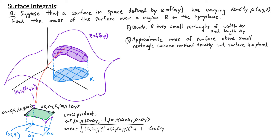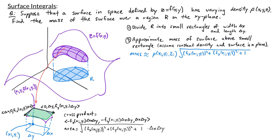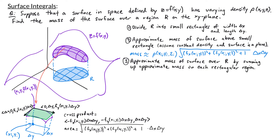Now we can approximate the mass of the surface above this small rectangular region. The mass is approximately the density times the surface area. The density we assume to be constant: rho of (xi, yi, zi) where zi is f of xi yi, times the area of the tangent plane. That gives us rho of (xi, yi, f of xi yi) times the square root of fx at xi yi squared plus fy at xi yi squared plus one, times delta x delta y.